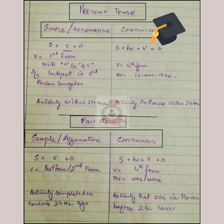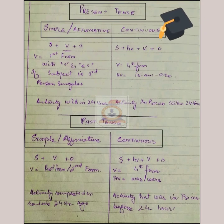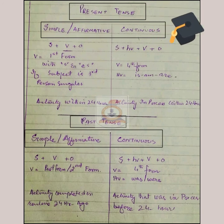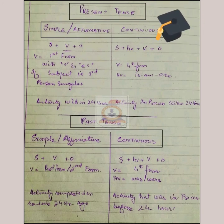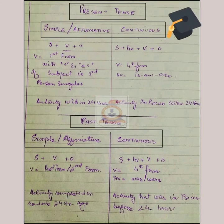Simple tense and continuous tense. Now, why have I jumped over past tense by skipping the last two categories of present tense, which were present perfect and present perfect continuous? The idea is to make you understand more quickly.